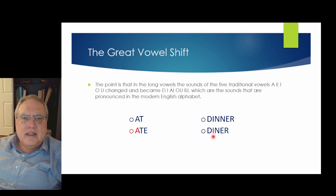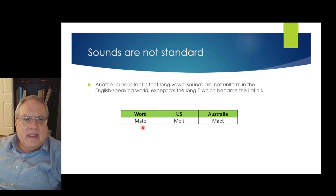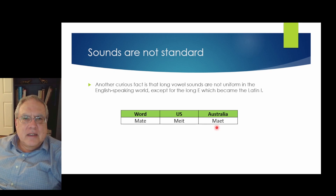However, in 'diner' (D-I-N-E-R) there is only one consonant between the I and the E, so the I becomes long and it is pronounced 'diner.' Another curious fact is that the long vowel sounds are not uniform in the English-speaking world, except for the long E, which became practically the Latin E. So A became E — in the word 'mate' (M-A-T-E), the A is long and it's pronounced 'ay.' In the US it would be 'mate,' but in Australia the pronunciation is more like 'might.'